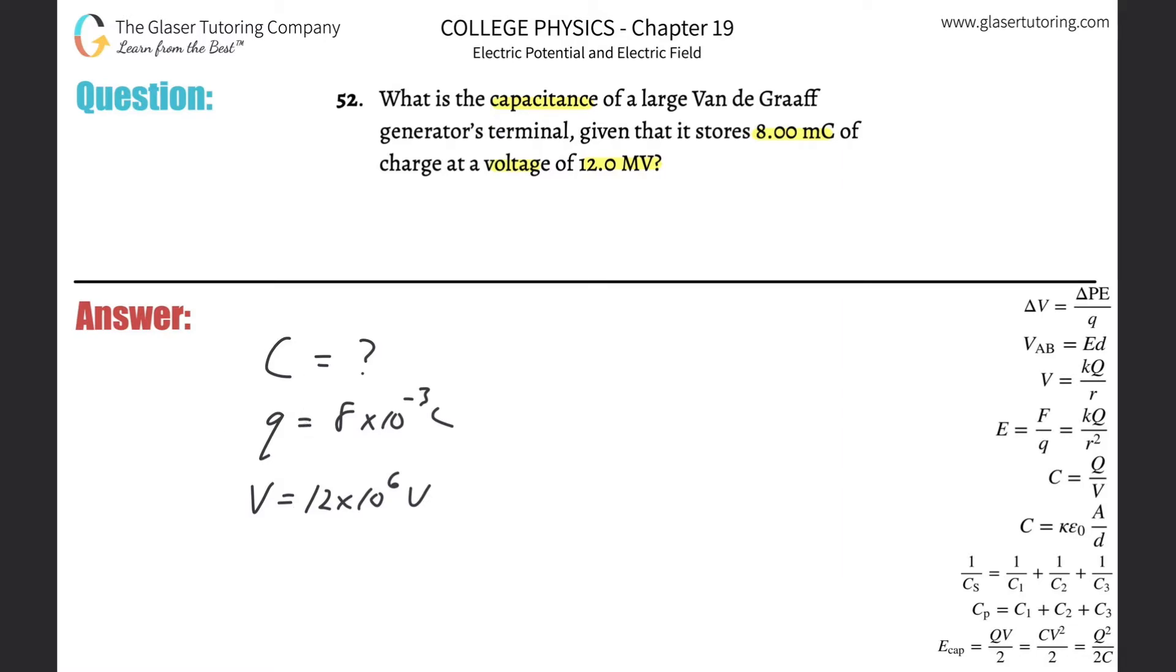Now we need to know a formula that relates these variables together. What is it? The capacitance of a capacitor is equal to the charge stored across that capacitor divided then by the voltage applied to the plates of that capacitor.